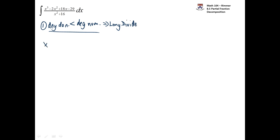So we need to take x squared plus 16 and long divide it into x cubed minus 2x squared plus 18x minus 29. There's no shortcut. There's no synthetic division. We have to actually long divide this ourselves.